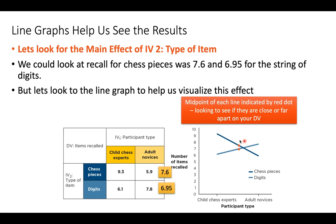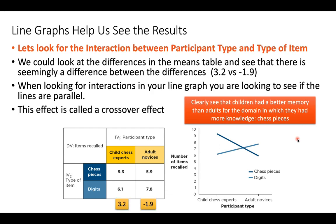Here's how you want to visualize that midpoint of each line. Now let's interpret the interaction. The rule of thumb is: if the slopes of the lines differ from each other, you probably have an interaction. That's the same information as the difference of differences — think of each difference score as the slope of the line. If those differences differ, we have an interaction. The slopes of these lines differ dramatically — in fact, they completely cross over one another, which we call a crossover effect or crossover interaction. This is the most dramatic and obvious type of interaction.